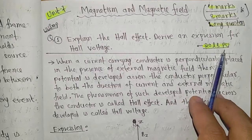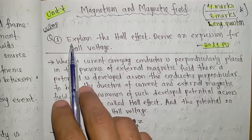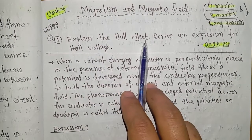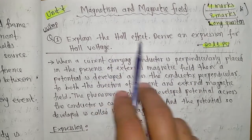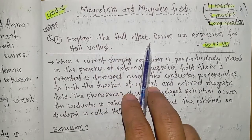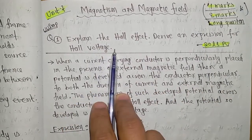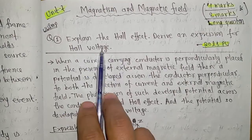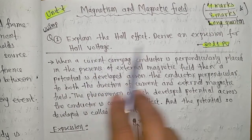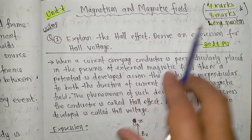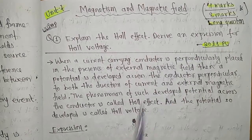Today's question is: Explain the Hall Effect and derive an expression for Hall voltage. We need to derive the expression for both Hall voltage and Hall resistance. This is worth eight marks maximum.